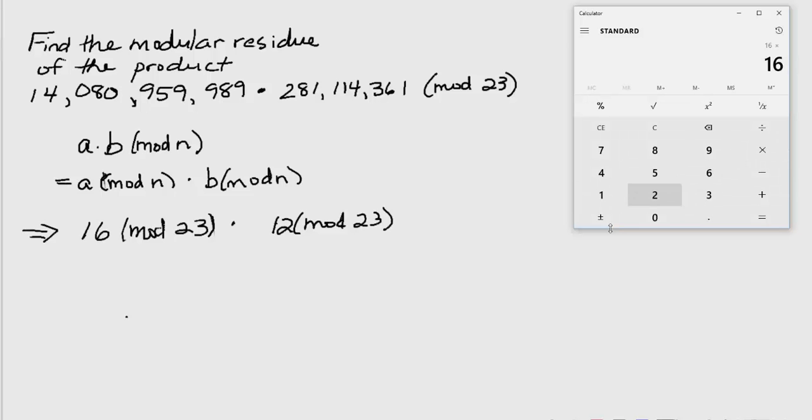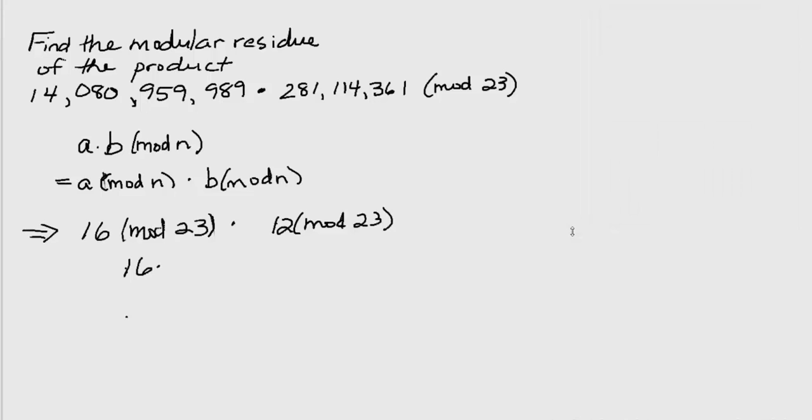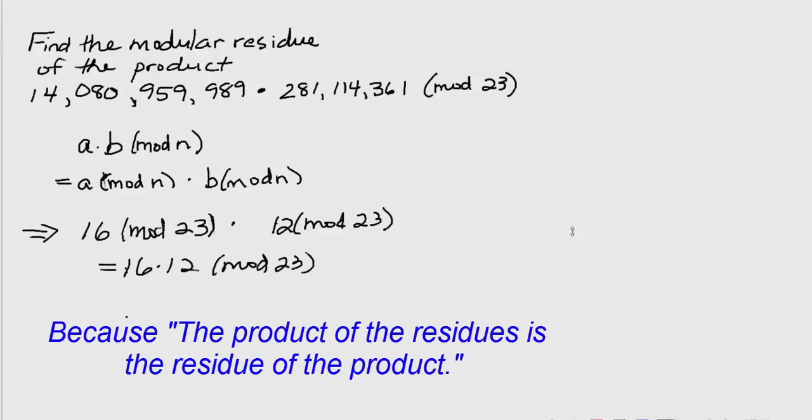16 times 12 is 192. So remember, this is equal to 16 times 12 mod 23, and we just found that this number is 192 mod 23.